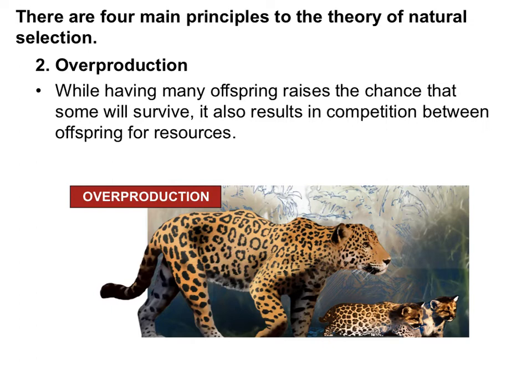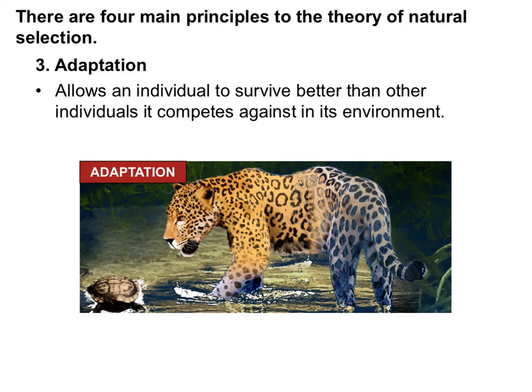The second requirement for natural selection is overproduction — having more offspring than the environment can handle. We need this because there must be some sort of competition where having a beneficial adaptation helps some organisms survive and reproduce more than others. If there's no competition and everyone reproduces equally, you won't get change in a population because nothing will be beneficial over anything else.